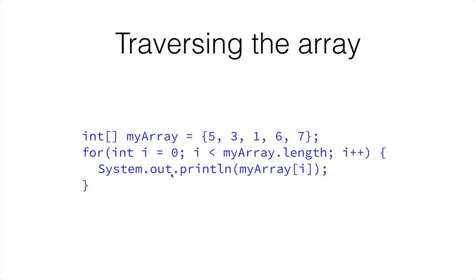This is why we iterate from 0, which is the 0th element or element number 1, to the length, but not including the length. The length is the number of elements. So whereas the last index is 4 — indices 0, 1, 2, 3, 4 — the size, or length, of the array is 5 elements. So if we go up to but not including 5, we're going from 0 to 4. This is how we would traverse the array.